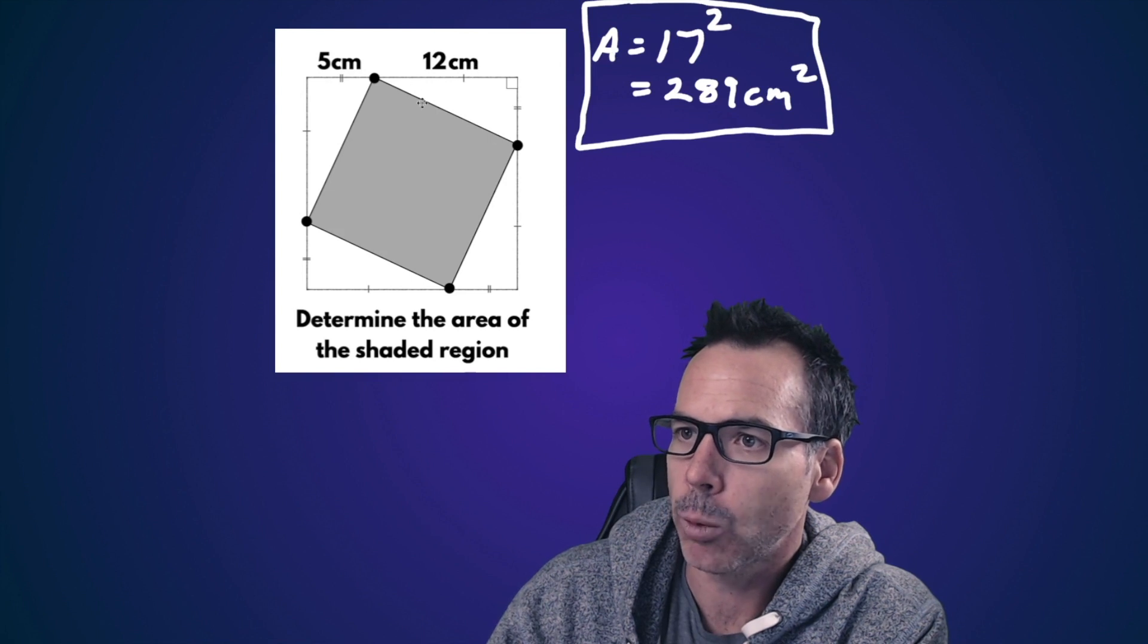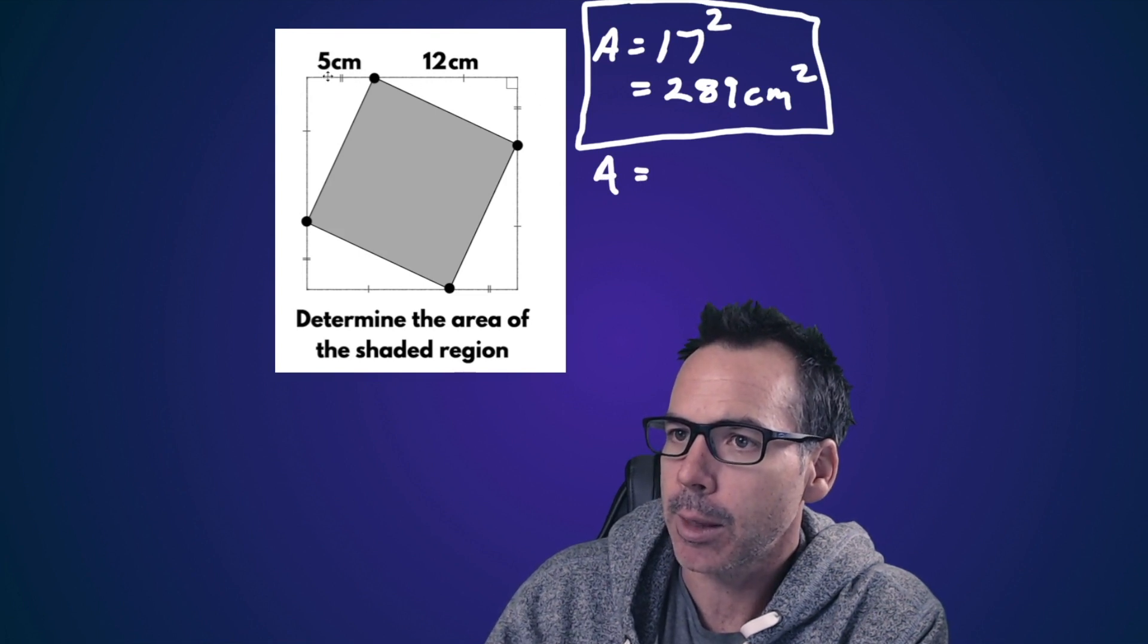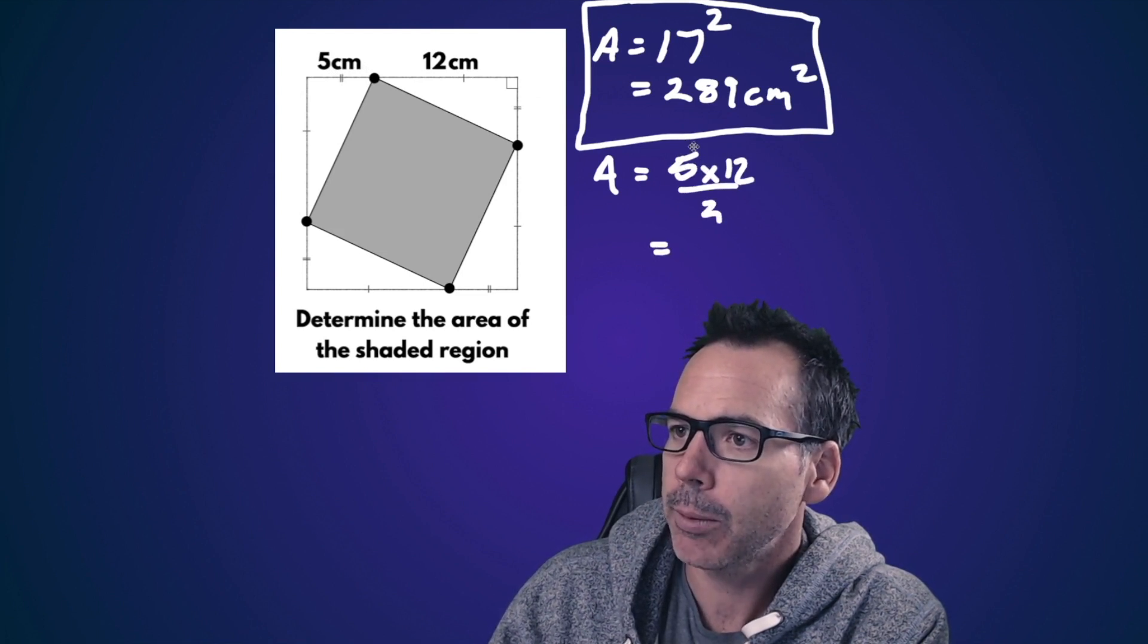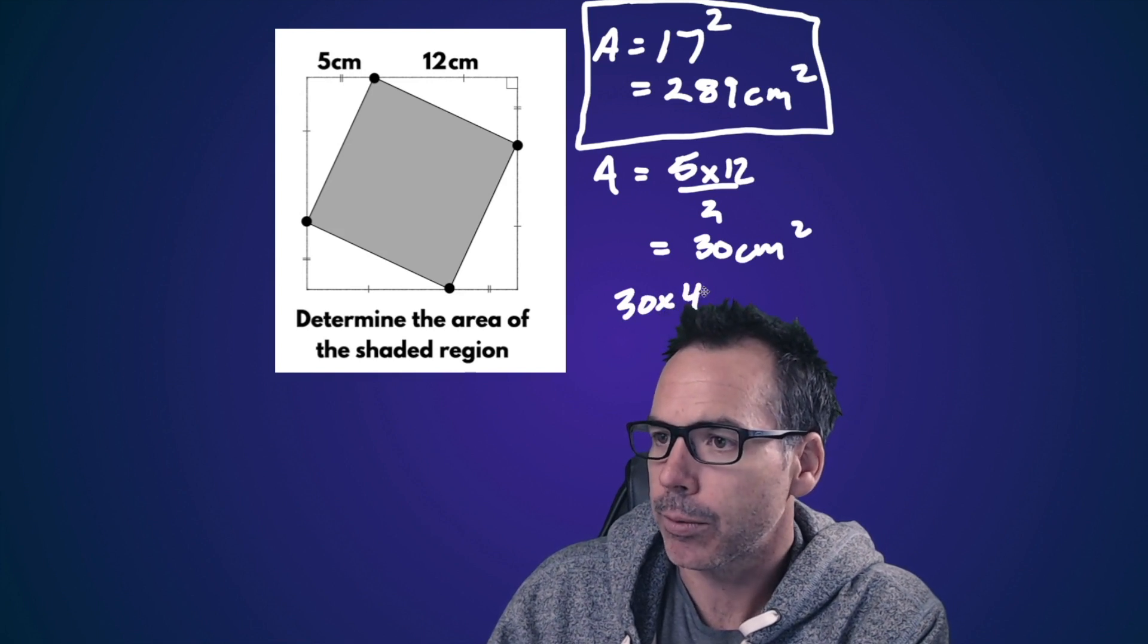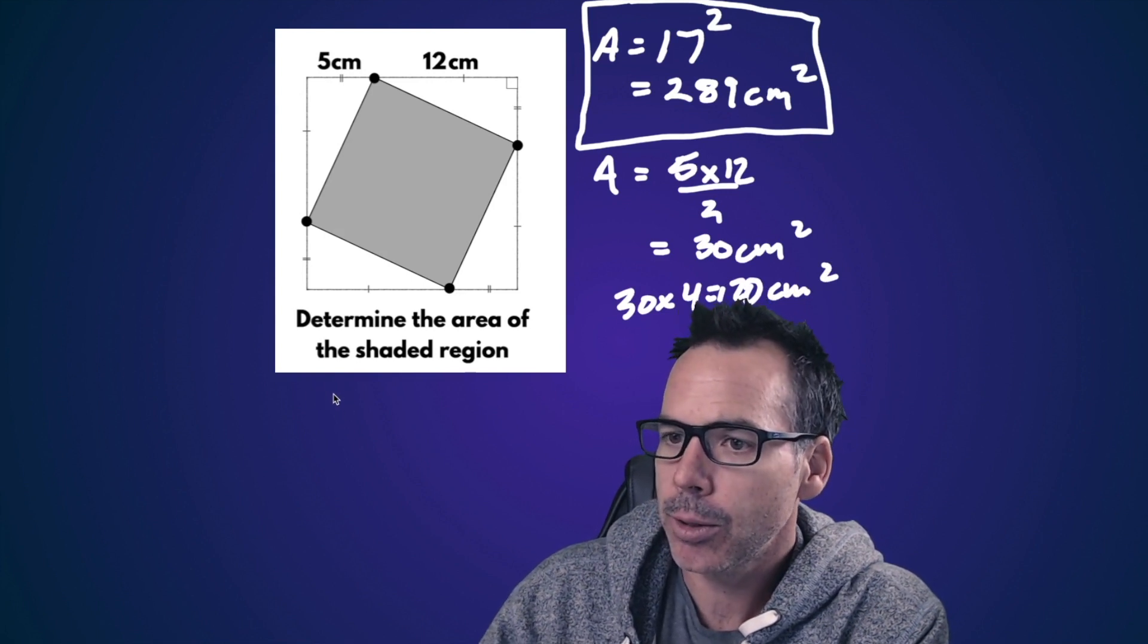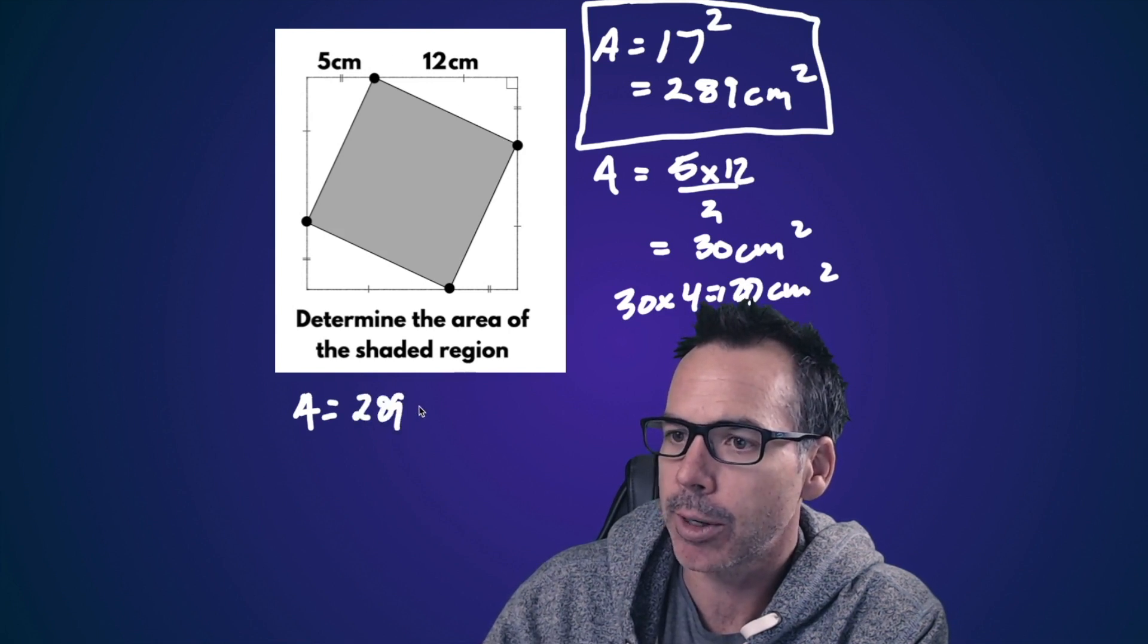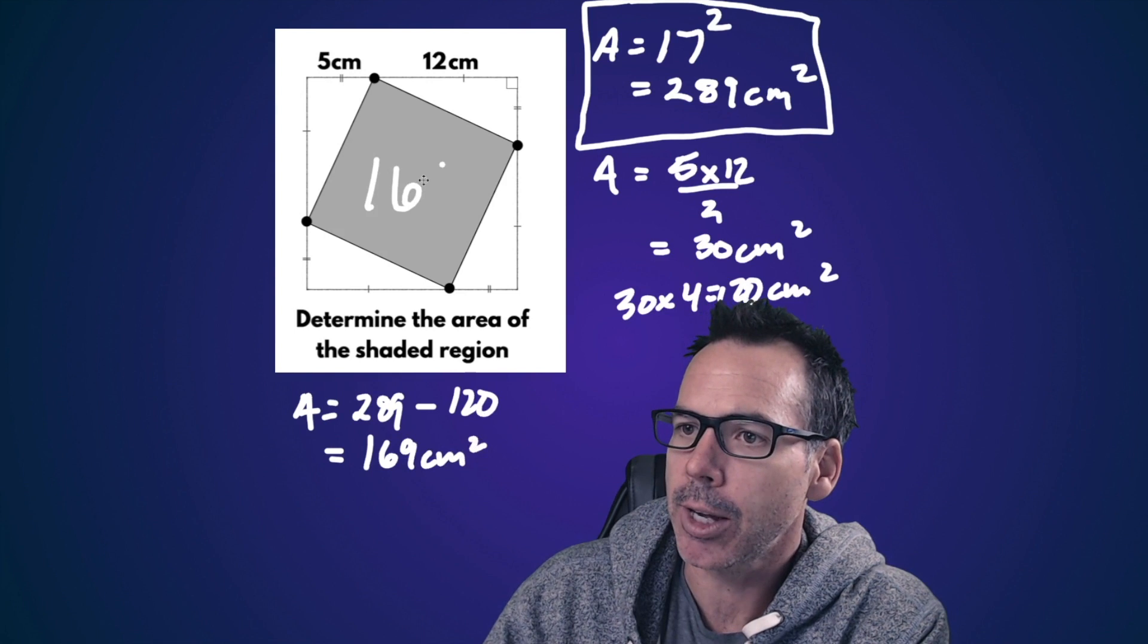We're going to subtract out the four congruent triangles here. So we're going to find one triangle with a base, let's say the base of 5 and a height of 12. So 5 times 12 divided by 2. We've got 60 divided by 2, we've got 30 square centimeters for one triangle. And therefore, we're looking at all four triangles. We're going to have 30 times four is 120 square centimeters. So our total combined area here for the shaded area would be to take the full area, the 289 square centimeters, subtract out 120. This leaves us with 169 square centimeters.